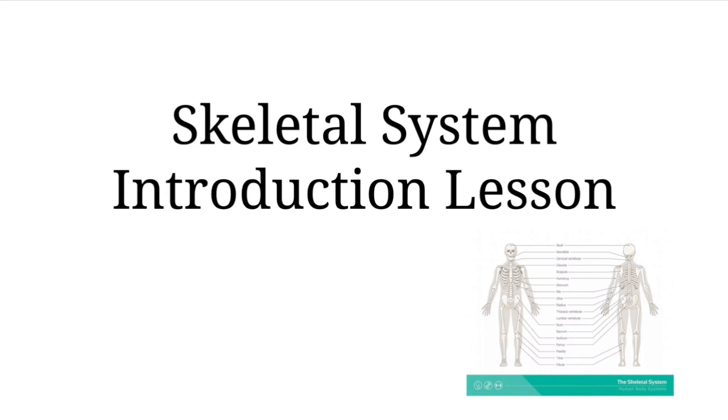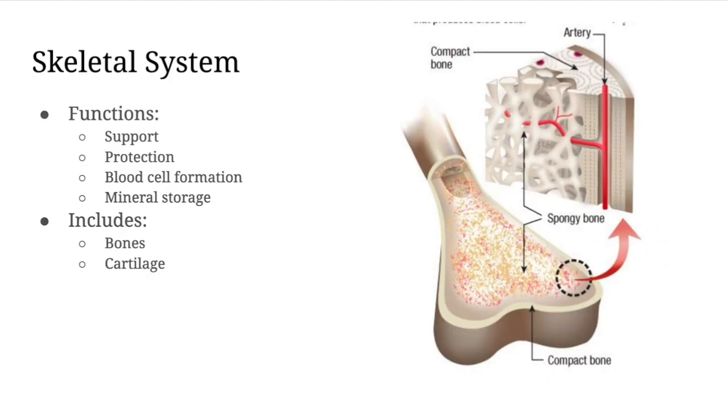Our second system that we're going to be looking at in our overview of all 11 body systems is the skeletal system. This system is composed of our bones and of cartilage. In a typical adult skeleton there's going to be 206 bones. At the end of our bones where they come into contact with other bones there's cartilage.